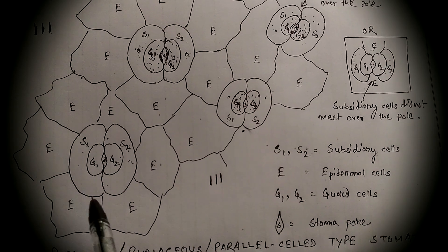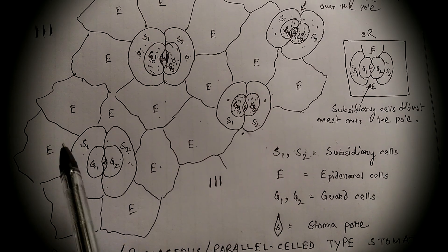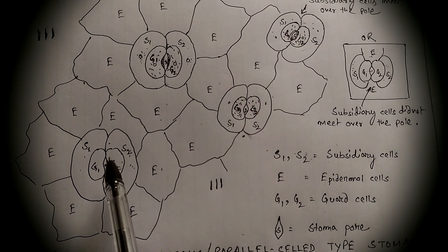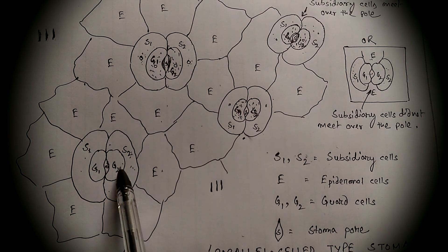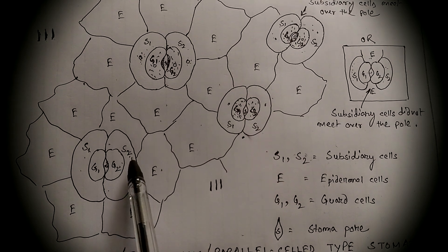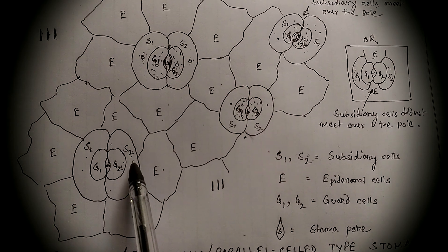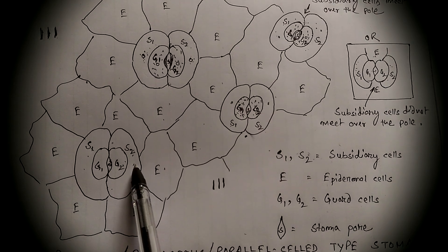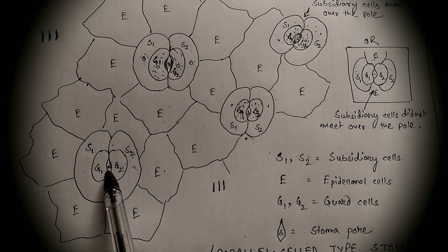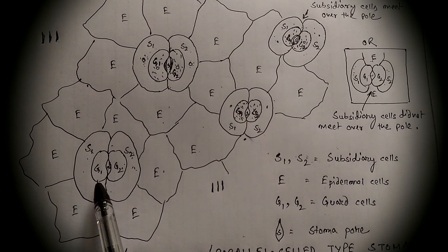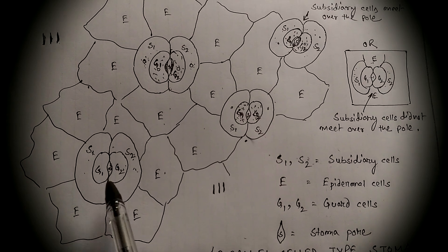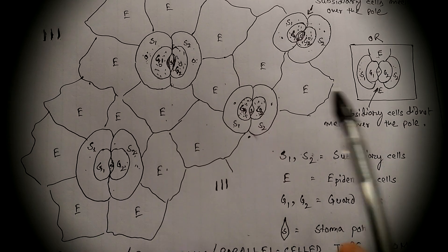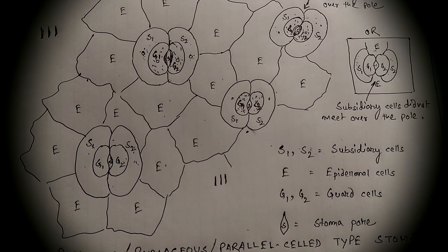The figure clearly indicates that guard cells, subsidiary cells, and stomatal pore are all parallel to each other.